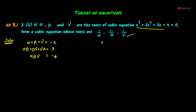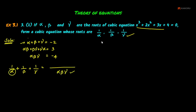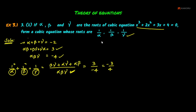First, we find 1/alpha + 1/beta + 1/gamma. Taking the LCM, this becomes (beta·gamma + alpha·gamma + alpha·beta) divided by alpha·beta·gamma. The numerator is alpha·beta + beta·gamma + gamma·alpha, which equals 3. Divided by alpha·beta·gamma which is -4, so this gives us -3/4.